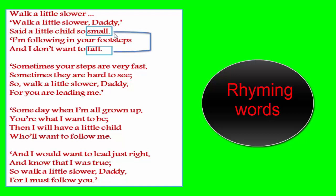Let's mark out the rhyming words from the second stanza. The ending words are fast, see, daddy, and me. See and me are similar in their ending sounds, so the second rhyming pair is see and me. In the third stanza, the ending words are grown-up, be, child, and me. So the next rhyming pair is be and me.